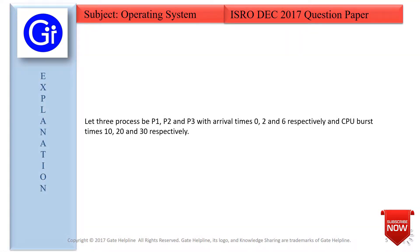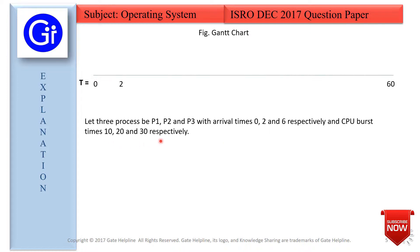Now we will see the explanation to this question. We are given 3 processes P1, P2, P3 with arrival times 0, 2, and 6 respectively, and CPU burst times 10, 20, and 30 respectively. We will prepare a Gantt chart as per the inputs given, and with the help of the Gantt chart we will be able to determine the context switches.